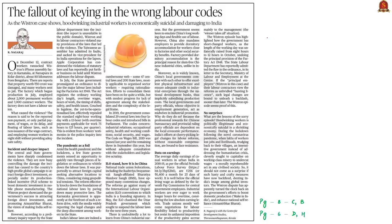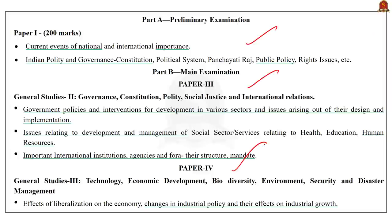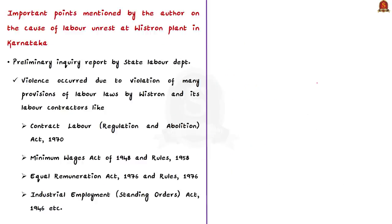Let us take up the comment column and Ground Zero articles from today's editorial page. These two articles relate to the labor unrest caused at the Wistron company — a Taiwanese company in Karnataka. Thousands of contract workers attacked the property, destroyed factories, laptops, iPhones, etc. due to reasons like non-payment or partial payment of wages, flouting of labor laws, and non-assurance of wage contracts.